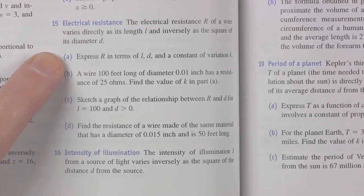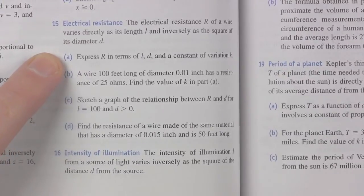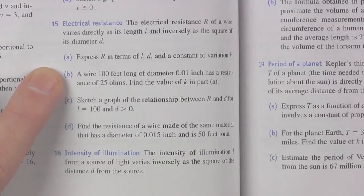Part A: Express R in terms of L, D, and the constant of variation, K. What are they doing? They're setting up the generic. Now they're giving you the information in order to find K.